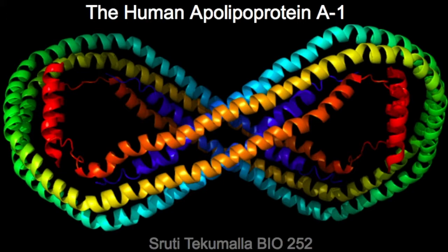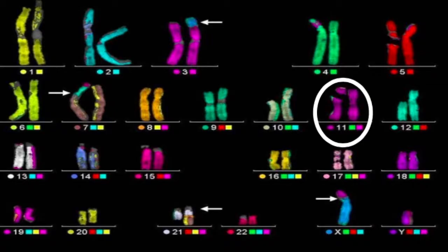It may seem impossible to figure out the function of the human apolipoprotein A1, but research says otherwise. The gene for ApoA1 is located on the 11th chromosome.